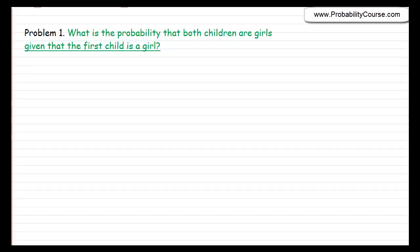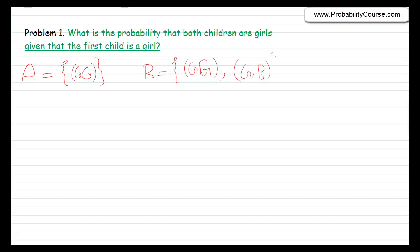Problem 1: What is the probability that both children are girls given that the first child is a girl? I suggest you solve this problem before watching the rest. Here we have event A: both children are girls. We are interested in the probability of A given B, where B is the event that the first child is a girl. If the first child is a girl, there are two possibilities: girl-girl or girl-boy.